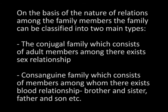On the basis of the nature of relations among family members, the family can be classified into two main types: the conjugal family, which consists of adult members among whom there exists a sex relationship; and the consanguine family, which consists of members among whom there exists a blood relationship, such as brother and sister, father and son, etc.